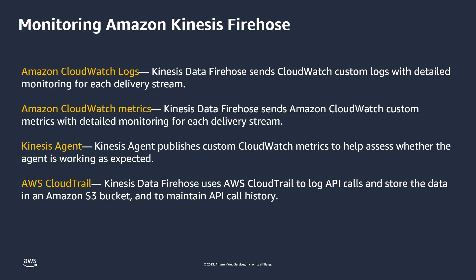You can monitor Kinesis Data Firehose using several different Amazon features. Kinesis Data Firehose sends Amazon CloudWatch logs and custom metrics with detailed monitoring for each delivery stream. Kinesis Agent publishes custom CloudWatch metrics to help assess whether the agent is working as expected. Kinesis Data Firehose uses AWS CloudTrail to log API calls and store the data in an Amazon S3 bucket and to maintain API call history.